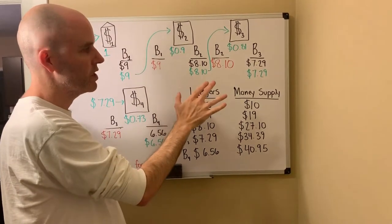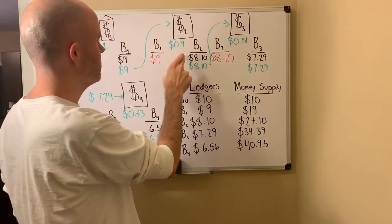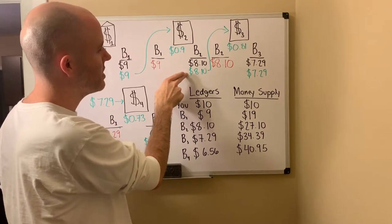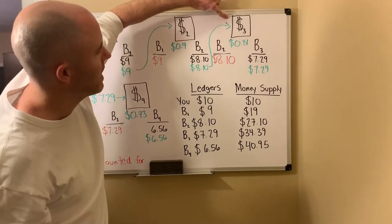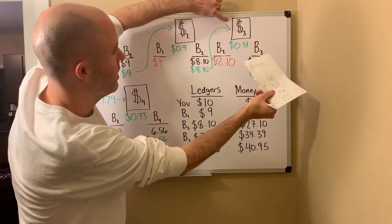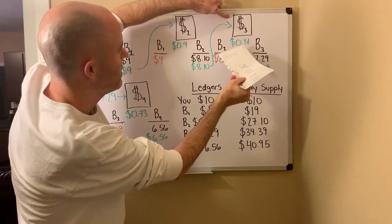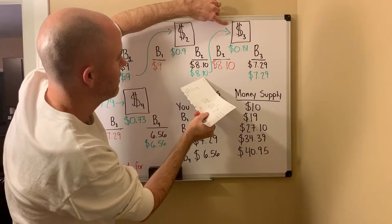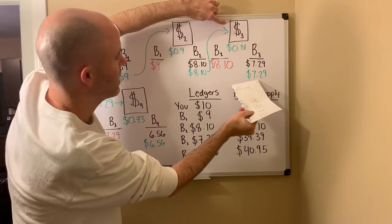We're just going to follow the money trail from here on out. The physical $8.10 is going to be deposited into bank number three. We've got another borrower here — maybe he wants to build a railroad. Basically, this bank is required to hold $0.81, which is 10% of that, and this bank can lend out $7.29.